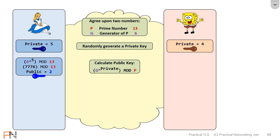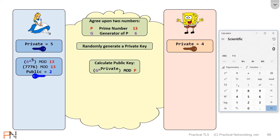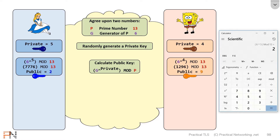So Alice will do this calculation: she's going to take 6 and raise it to the fifth power, then figure out the remainder when divided by 13. That gets her an answer of 2. Bob is going to do the same thing except he uses his own private value — he takes the generator 6 and raises it to his private value of 4, then figures out the remainder when divided by 13, and that gives him 9.